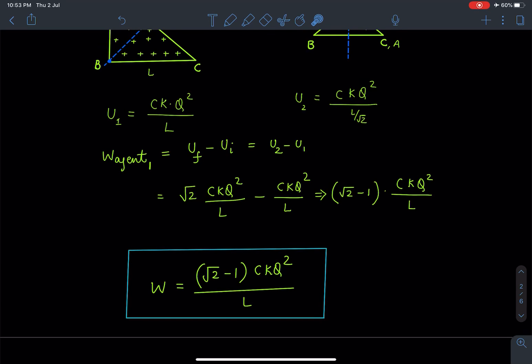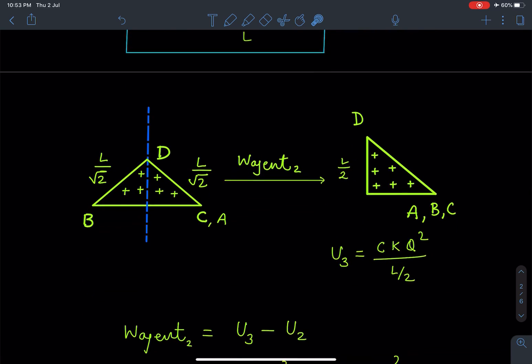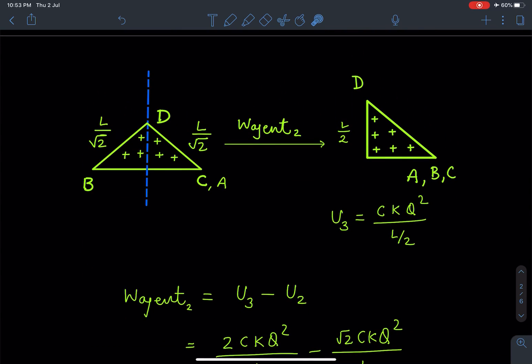When we are giving this second fold, in that process this work done I'm calling as W_agent2. This is what we have to calculate in first part. So we'll be using one more time the same formula here. U3 will become C, the same constant due to geometry, kq^2/L. Instead of L now this will become L/2 here.